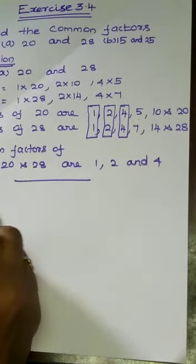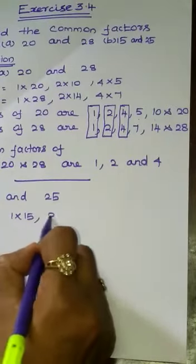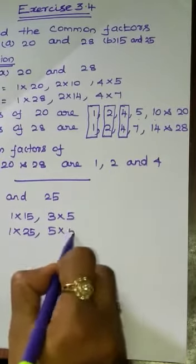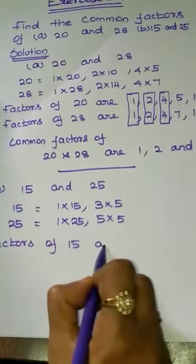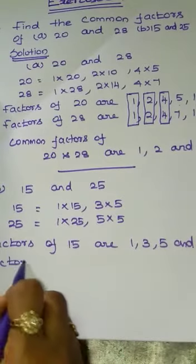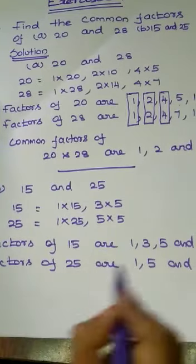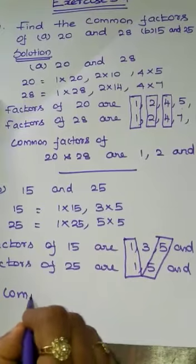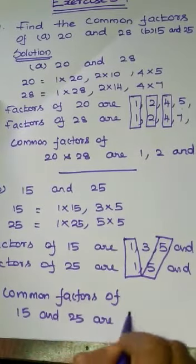Second subdivision: 15 and 25. How can we write 15? 1 × 15 and 3 × 5. For 25: 1 × 25 and 5 × 5. So the factors of 15 are 1, 3, 5, and 15. The factors of 25 are 1, 5, and 25. The common factors of 15 and 25 are 1 and 5.